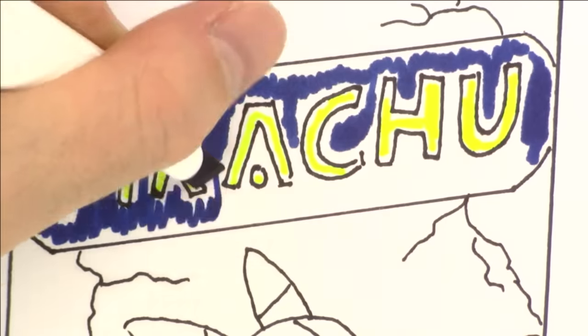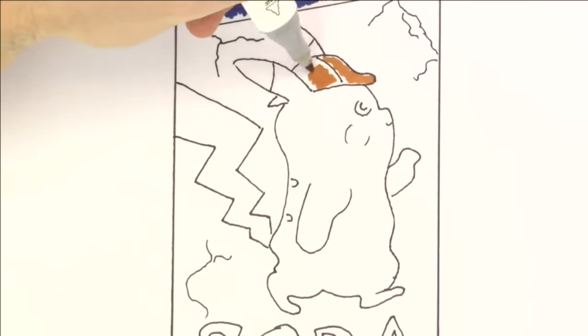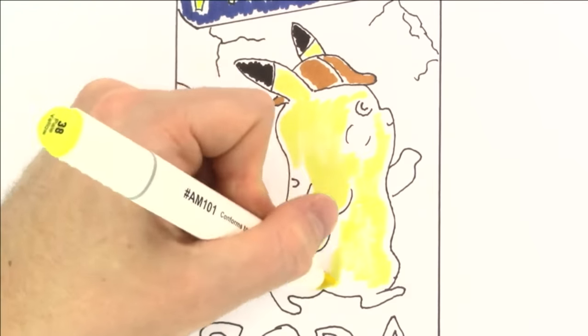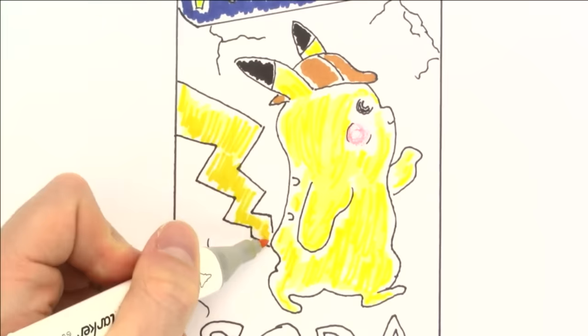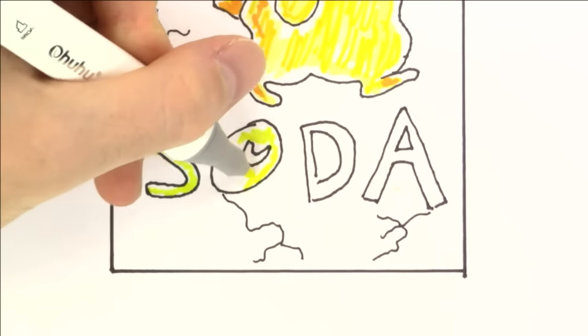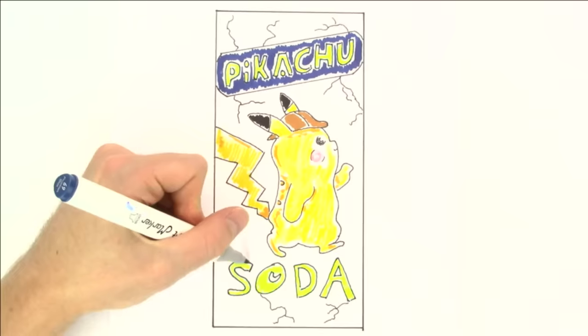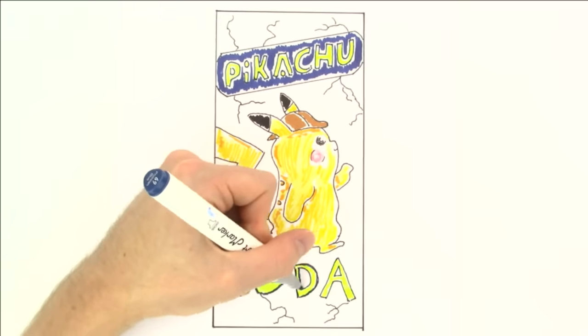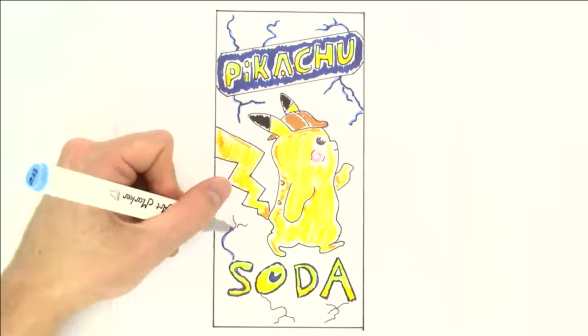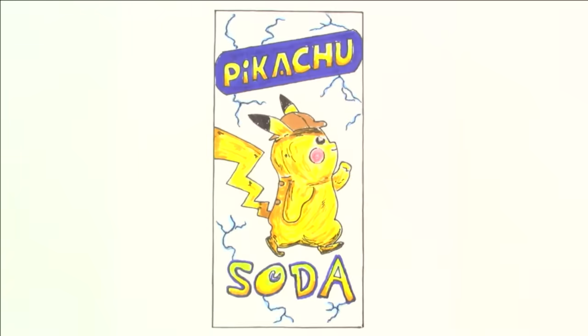However, even though he's cute, you don't want to mess with Pikachu. He's very powerful, especially with his electrical bolt attack. Now let's call this Pikachu soda. Well, it's partially soda. It will have a lot of other things mixed in with it too. Now we just need to quickly color this all in. We'll need some brown for his hat and some red for his cheeks. His fur is mostly yellow, but there's a tad of brown in there too.